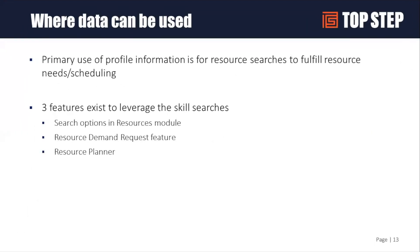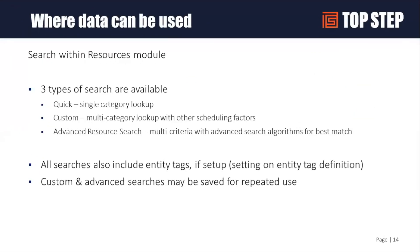Once you have a profile, where can you use it? The main area is searching for somebody. There are three different types of searches in OpenAir in the Resource module: the quick search, which gives you the ability to look up something by skill category; the custom search, which allows you to combine categories, availability, and other factors; and the advanced resource search, which is similar to custom but has more functionality and uses a different search algorithm to find the best match. The advanced search is what we tend to advertise most with customers.